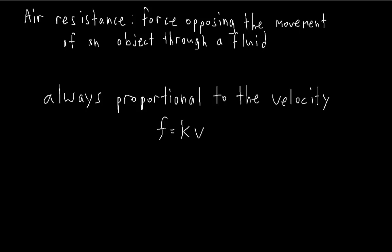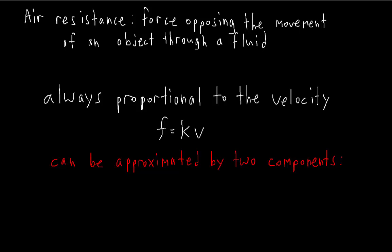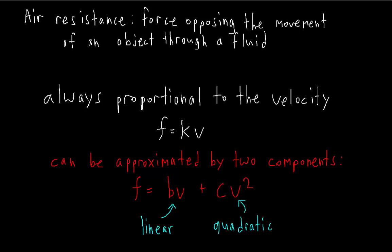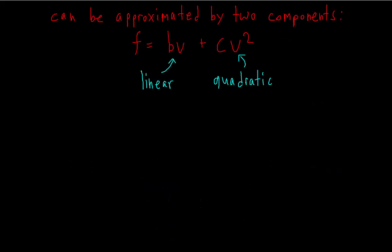The magnitude of the air resistance force is a constant times the velocity. In most situations, the air resistance on an object can be split into two components: one called the linear component, and one the quadratic. The linear is proportional to just the velocity, and the quadratic is proportional to the velocity squared. These two components arise for different reasons and have different properties.